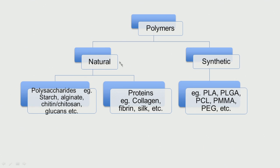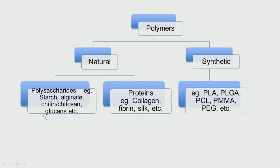We have two big groups of biopolymers: polysaccharides and proteins. Polysaccharides have saccharide groups like glucose or mannose connected in different architectures and molecular weights — like starch, alginate, chitin, chitosan, and glucans. Proteins have the peptide bond, that is the amide bond (C=O, N), like collagen, fibrin, and silk. So natural polymers are either polysaccharide-based or protein-based — these are all based on sugars, while those are proteins.